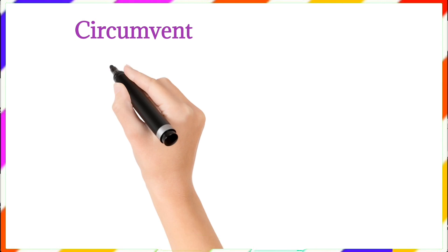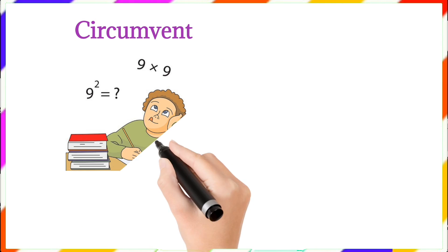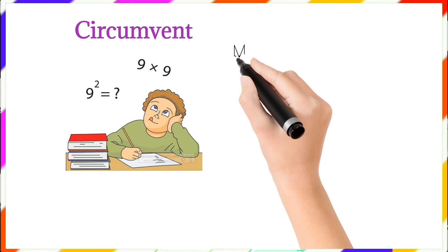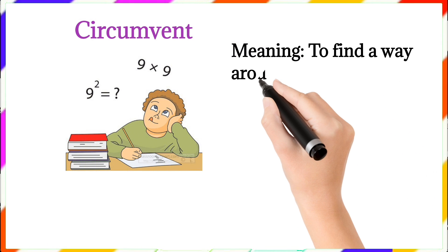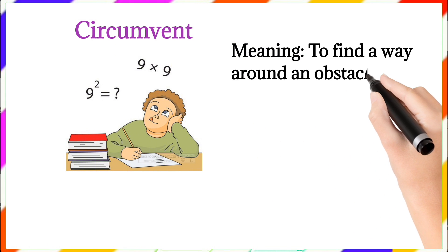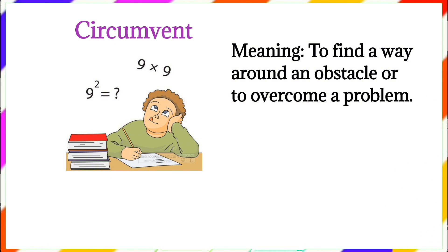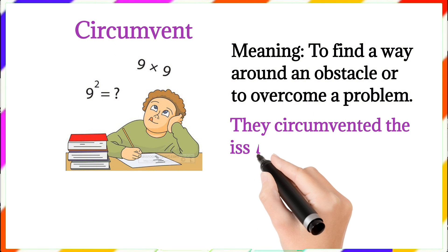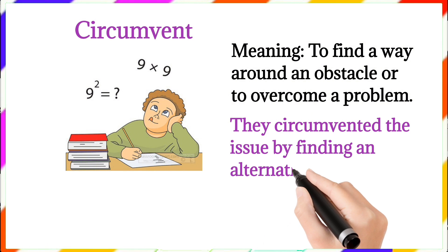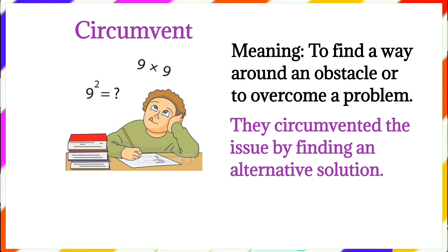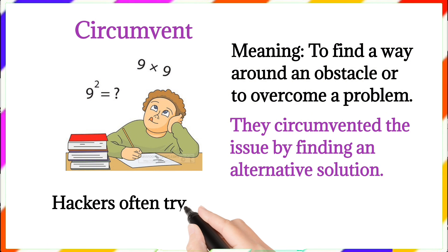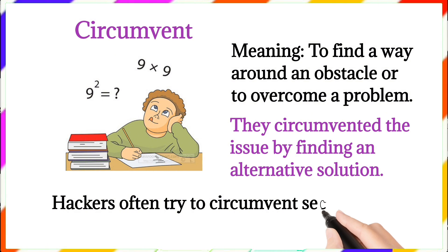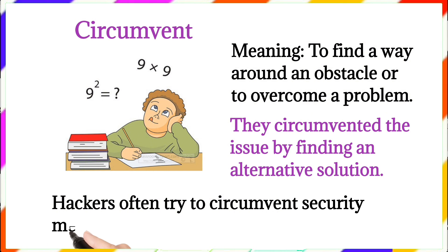Circumvent. Meaning: to find a way around an obstacle or to overcome a problem. Examples: They circumvented the issue by finding an alternative solution. Hackers often try to circumvent security measures.